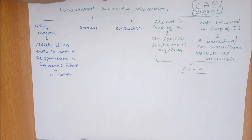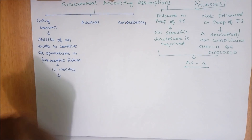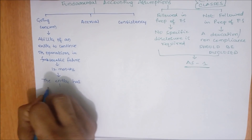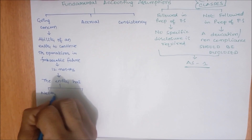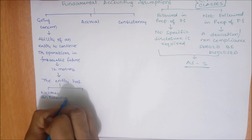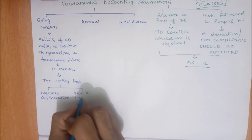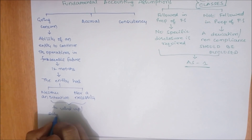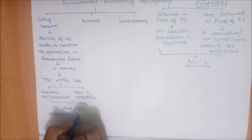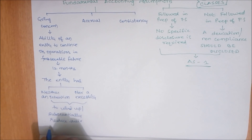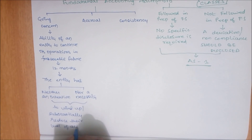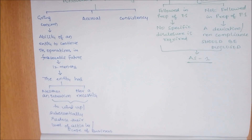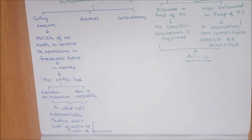The entity will be able to continue its operations — meaning the entity has neither an intention nor a necessity to wind up or substantially reduce their level of activity or scope of business. So going concern means the entity is not going to shut down.